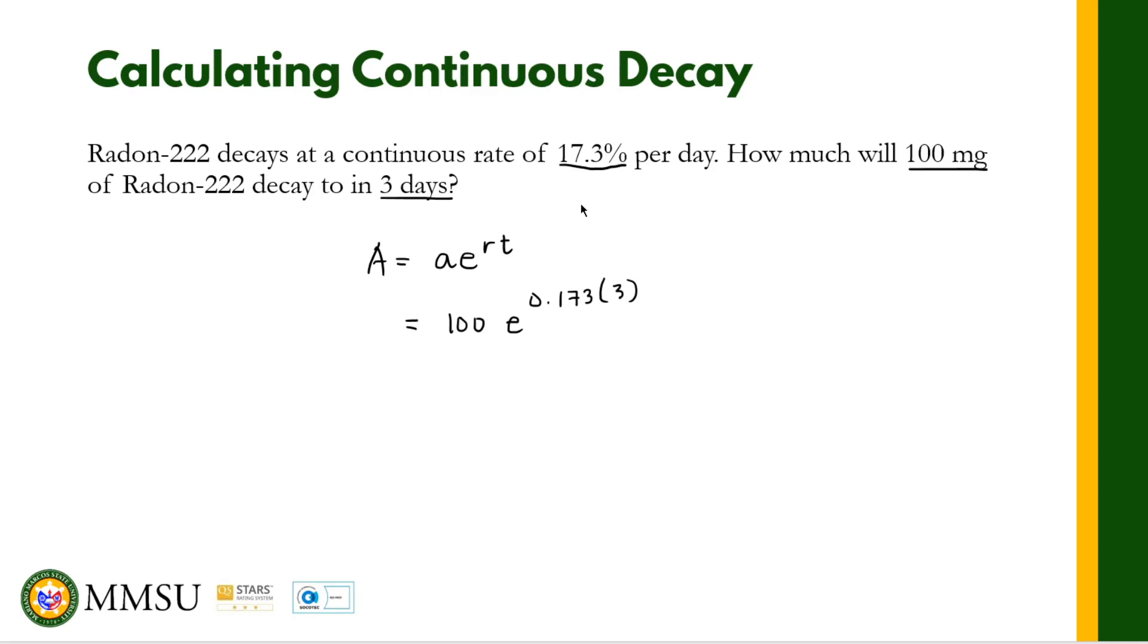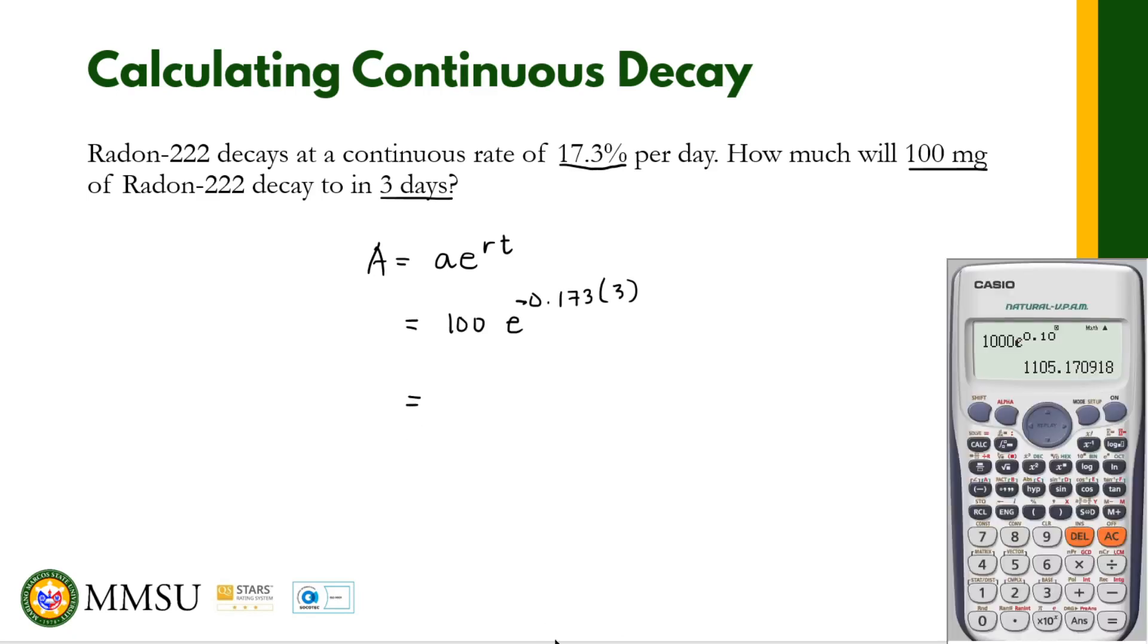But remember, if we are talking about decay, the rate of decay, the rate is negative. So that's negative 0.173, so that's negative 0.173.